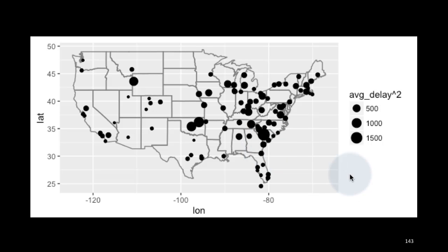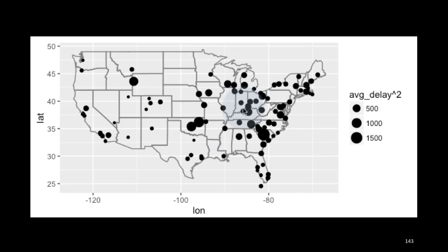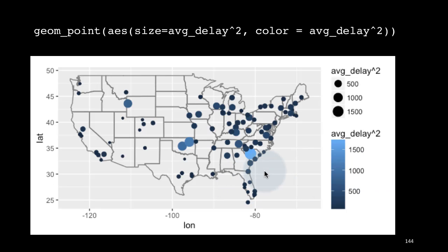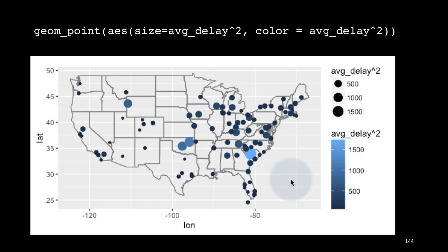We might want to further dramatize this by adding color — so we've got both size and color. This removes some of the overlapping that was occurring earlier in certain areas. Adding redundant visual cues in this form actually seems to help. We could have made the color proportional to just the average delay rather than its square, but then the discrimination may not have been as clear. This is showing additional techniques to visualize data more clearly.